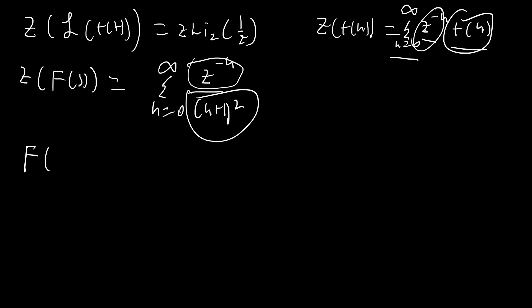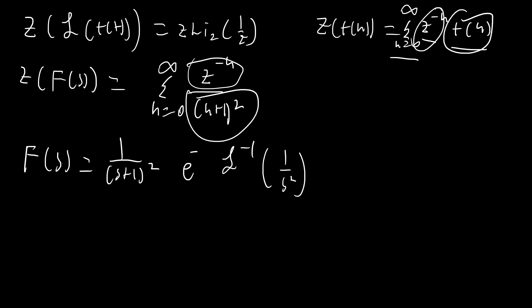That tells us that big F of s is 1/(s+1)². For those familiar with Laplace transforms this is very straightforward. Since we have everything in terms of s plus one, all we need to do is find the inverse Laplace transform of 1/s² and then multiply by e^(−t). This works because when you multiply a function by e^(−t) and take the Laplace transform, it shifts over by one. The inverse Laplace transform of 1/s² is simply t, so overall our f of x equals x·e^(−x).